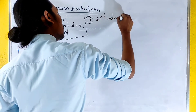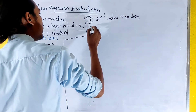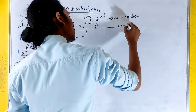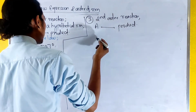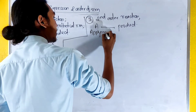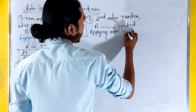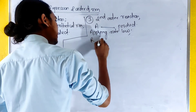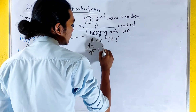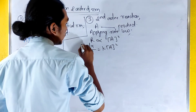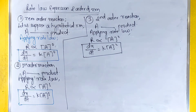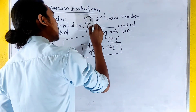Second order reaction: applying rate law, rate is directly proportional to A to the power 2. That is, dx/dt equals k times A to the power 2. This is the second order rate expression.